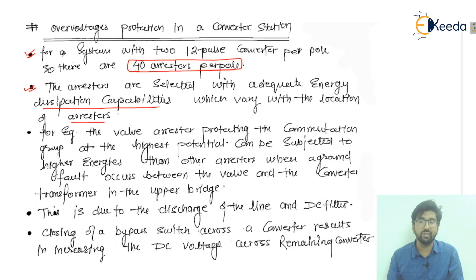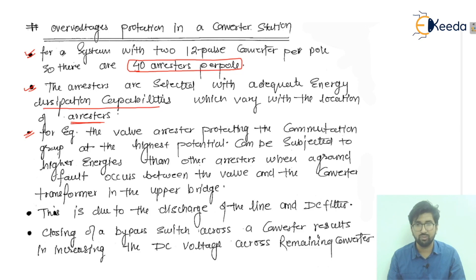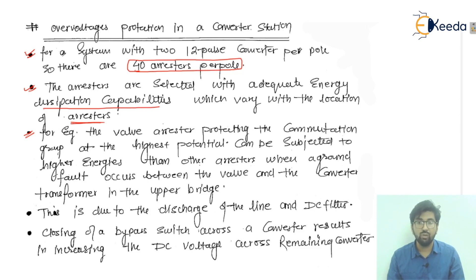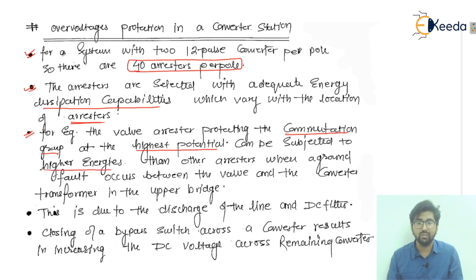The energy dissipation capability varies with the location of the arrestors. For example, the wall arrestor protecting the commutation group — we have two types of commutation groups: the positive commutation group numbered 1, 3, 5 and the negative commutation group numbered 4, 6, 2. The wall arrestors protecting the commutation group at the highest potential can be subjected to higher energies than other arrestors.